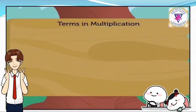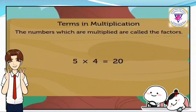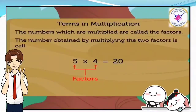Look at the example: 5 times 4 is equal to 20. The numbers which are multiplied are called the factors. So in this example, the numbers 5 and 4 are the factors. The number obtained by multiplying the two factors is called the product, and 20 is the product.